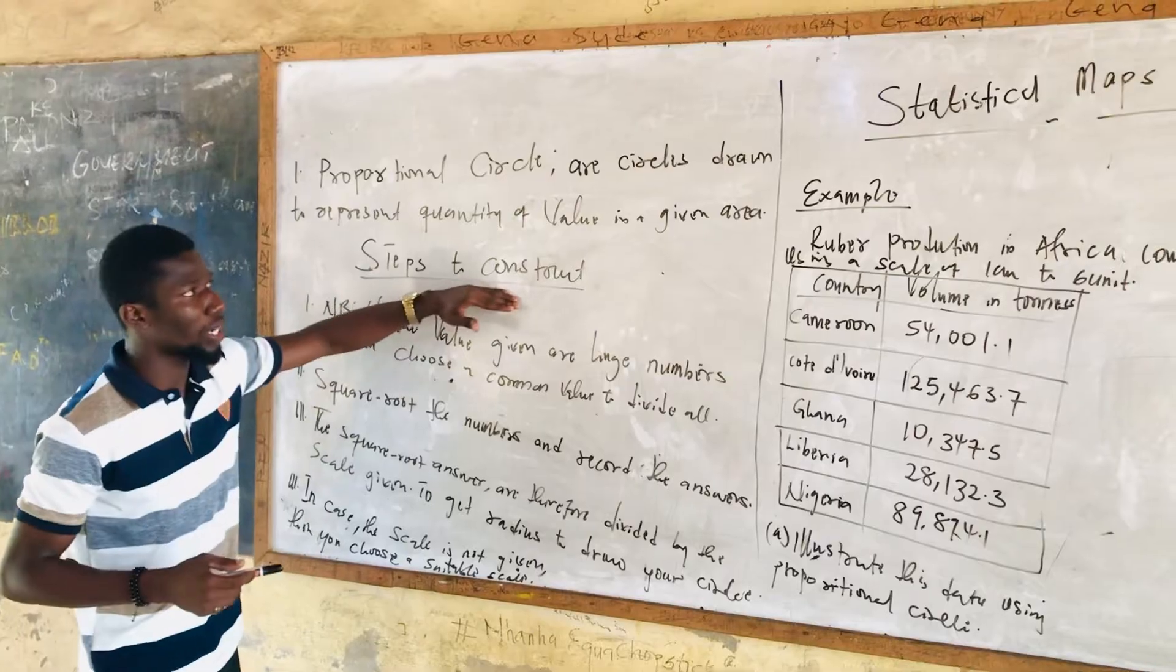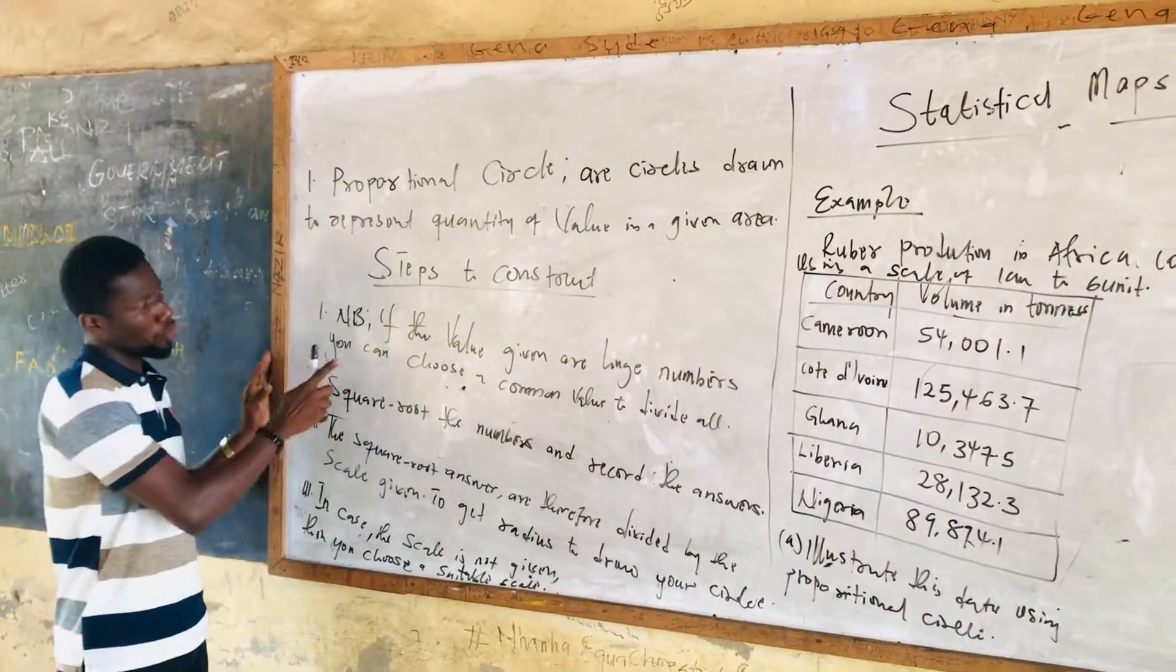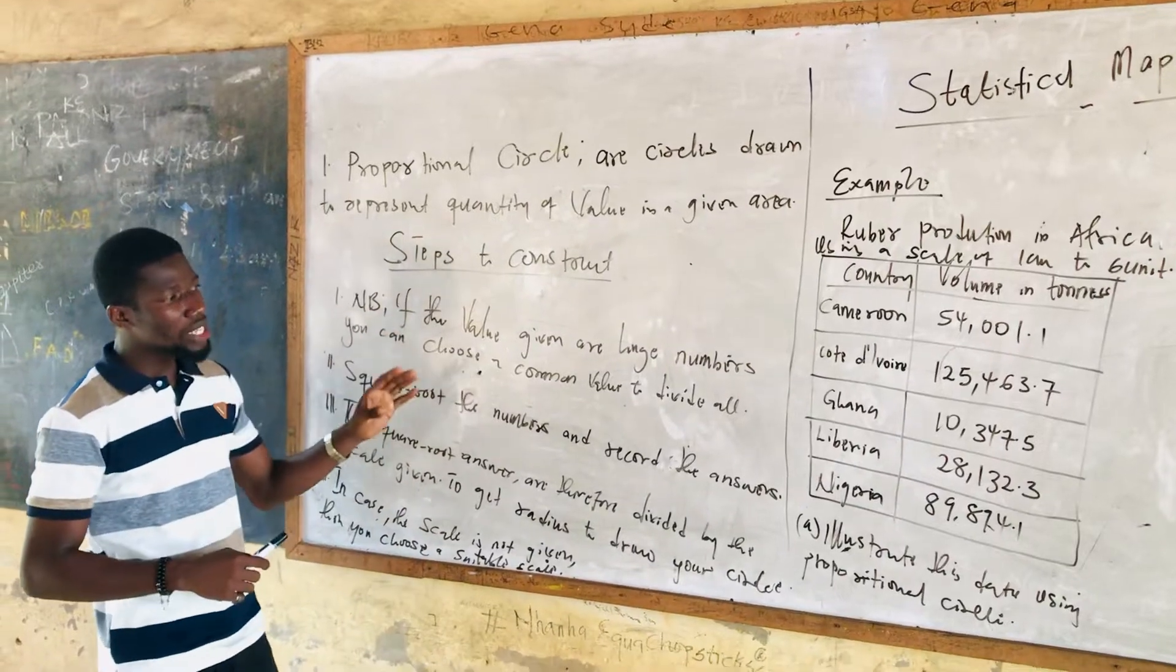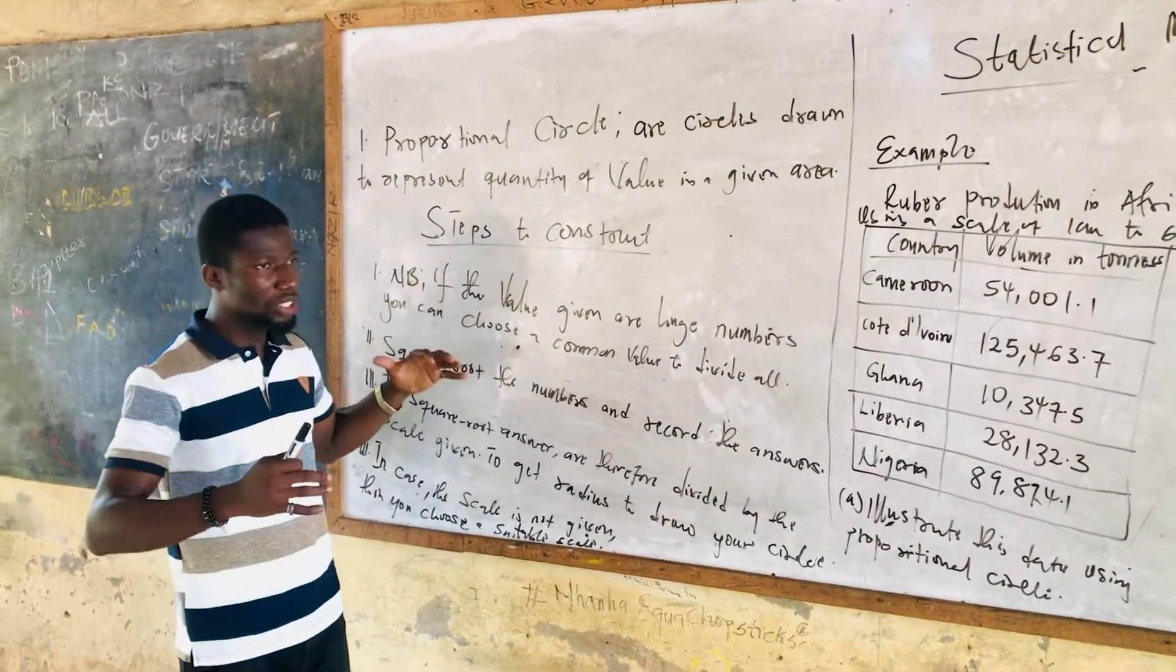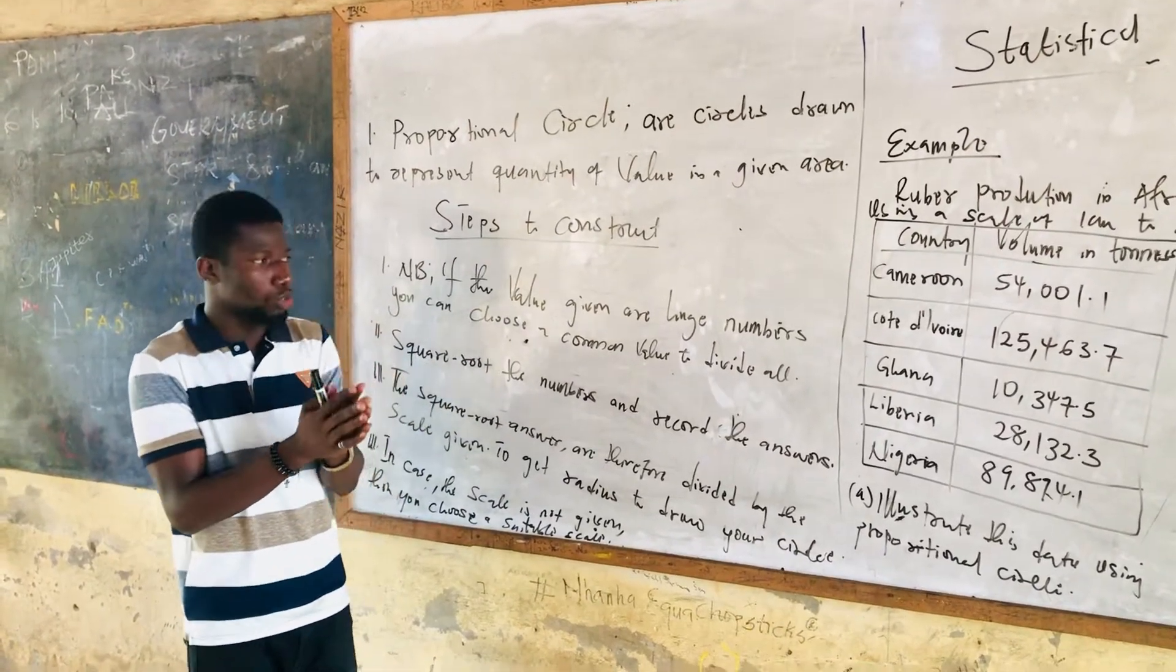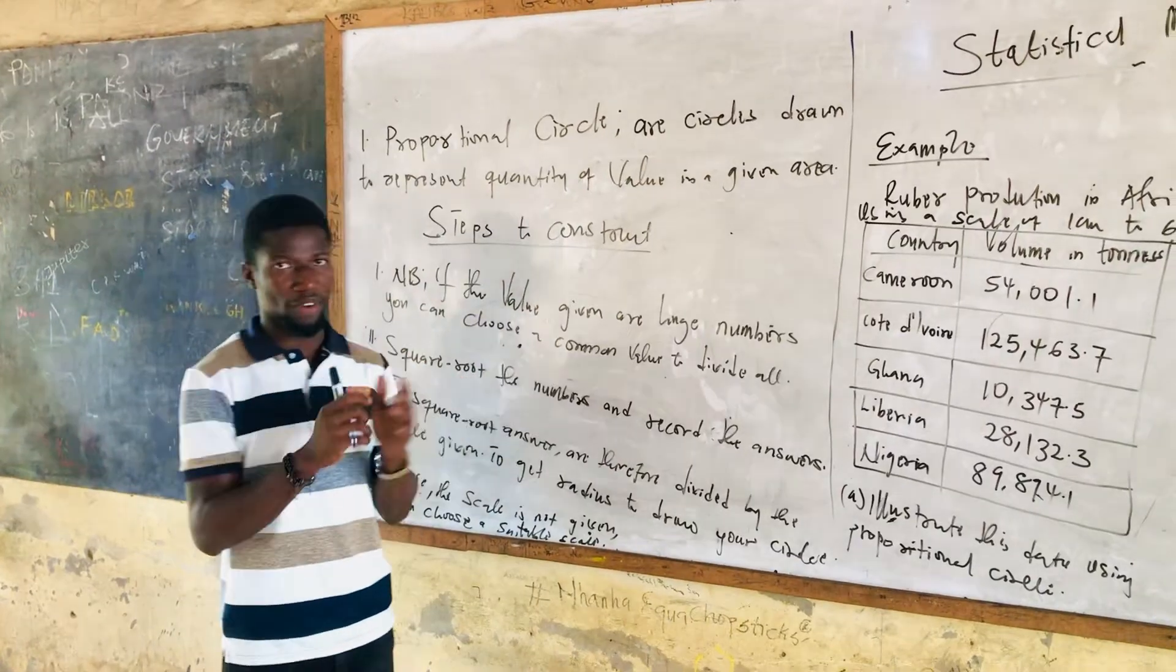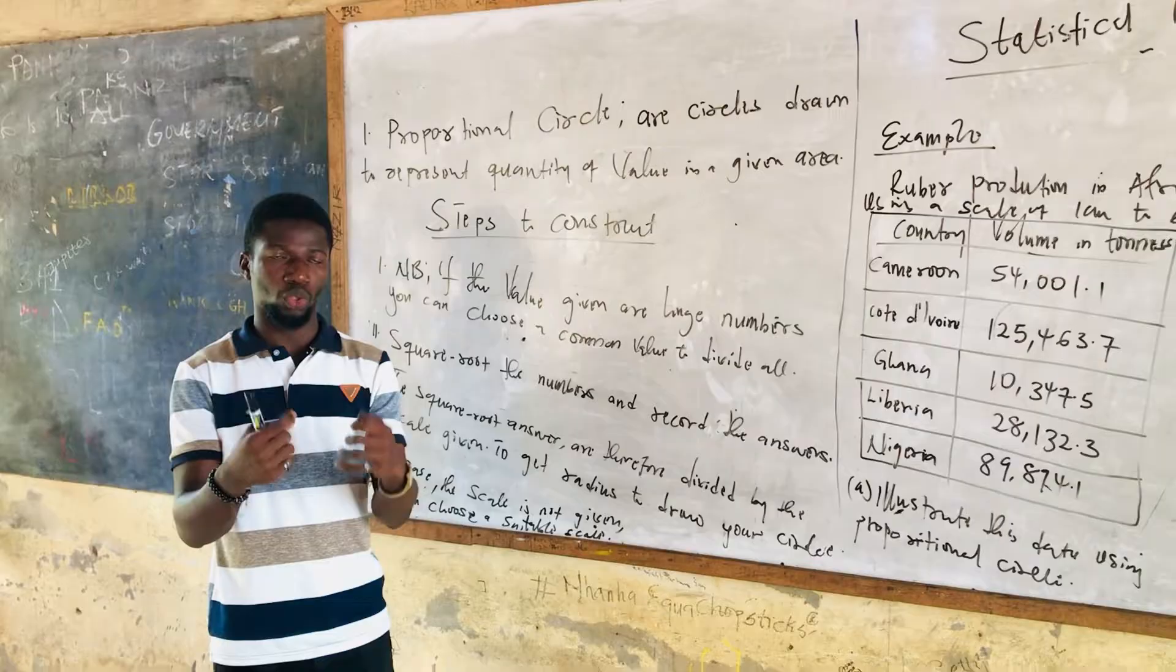Steps to construct a proportional circle. First, you have to know this: if the values given to you in the question are huge numbers, then you can choose a common number or a common value to divide all the values to obtain a smaller number to enable you to calculate.